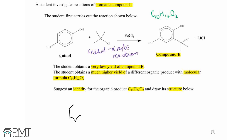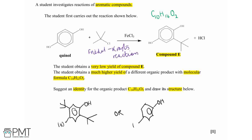There are a couple of different options for drawing this new compound. Starting from the quinol base with one group already substituted, we could place the second substitution in one position, or alternatively substitute it in a different position on the ring. Other configurations rotate or flip back to these two, so the mark is awarded for drawing either of these structures.